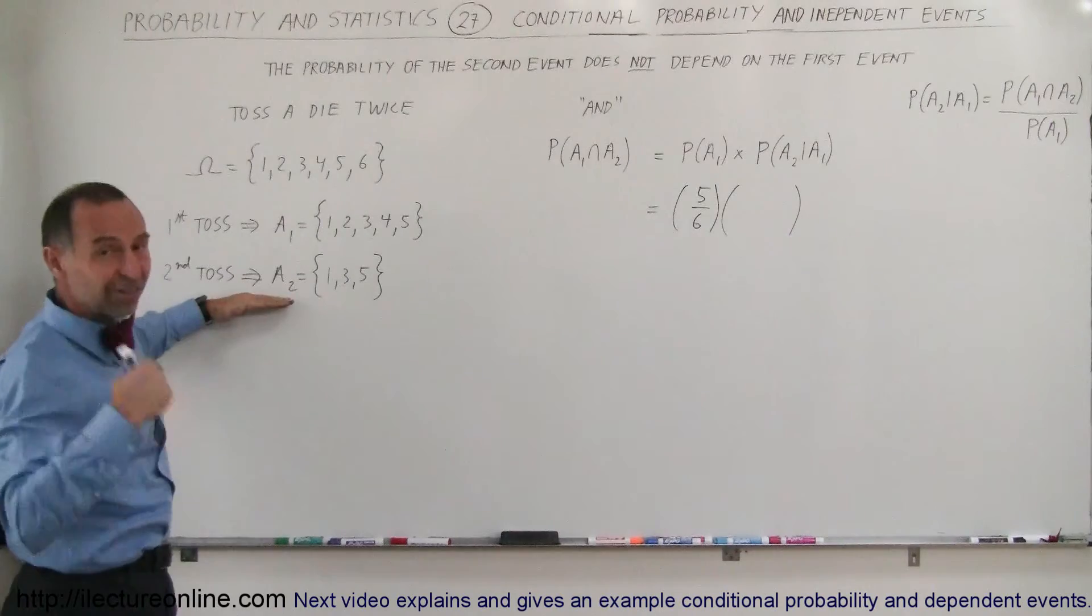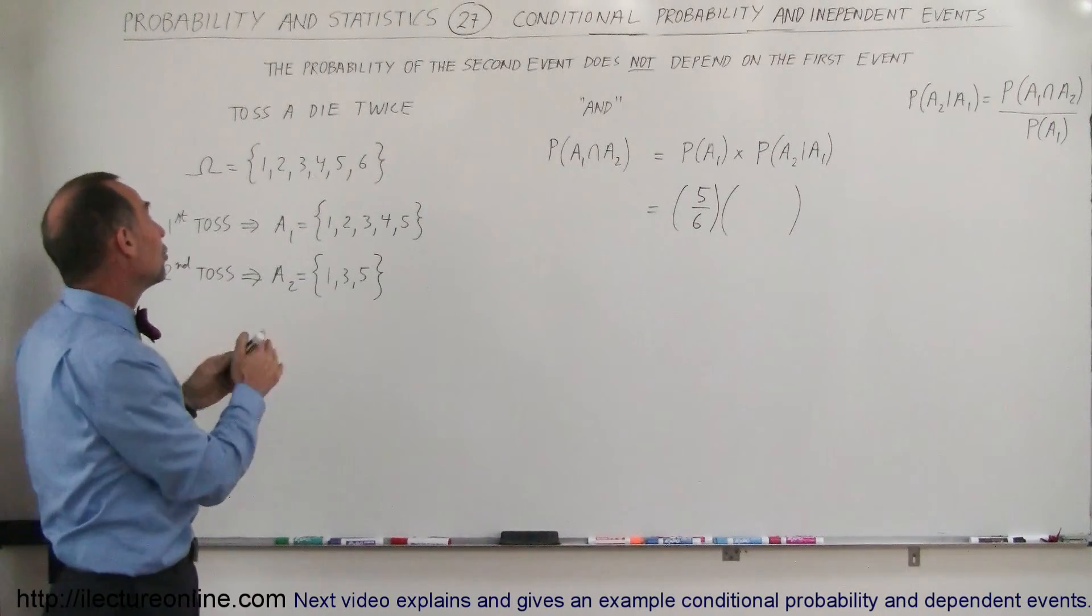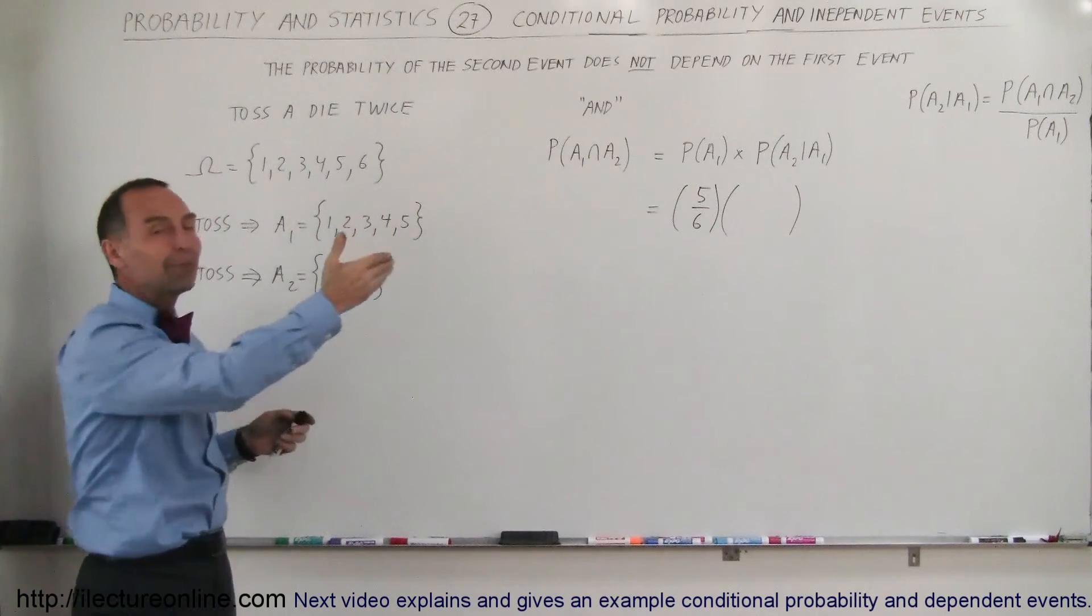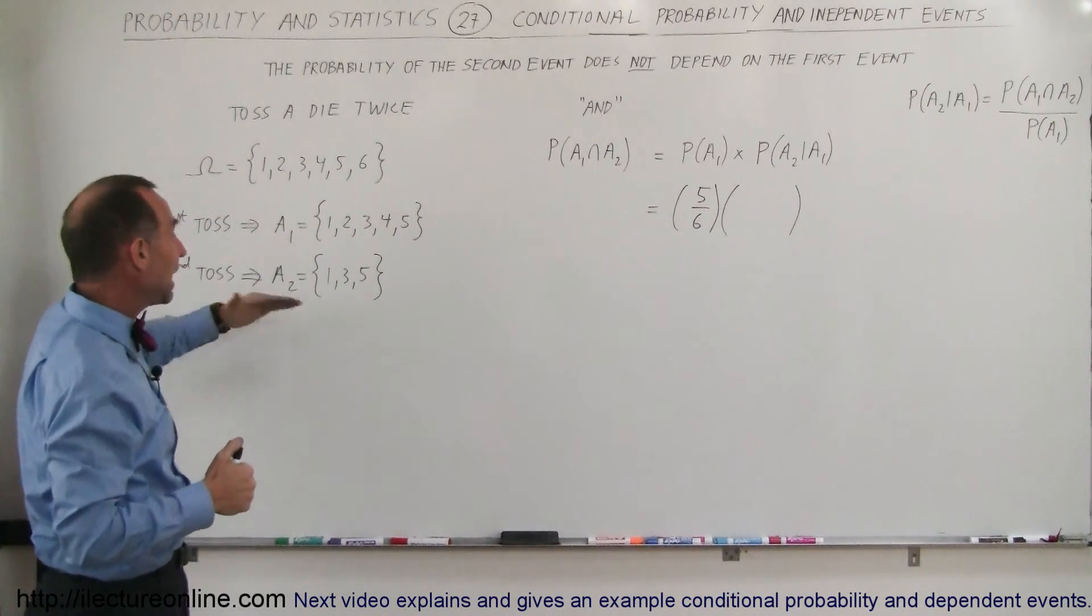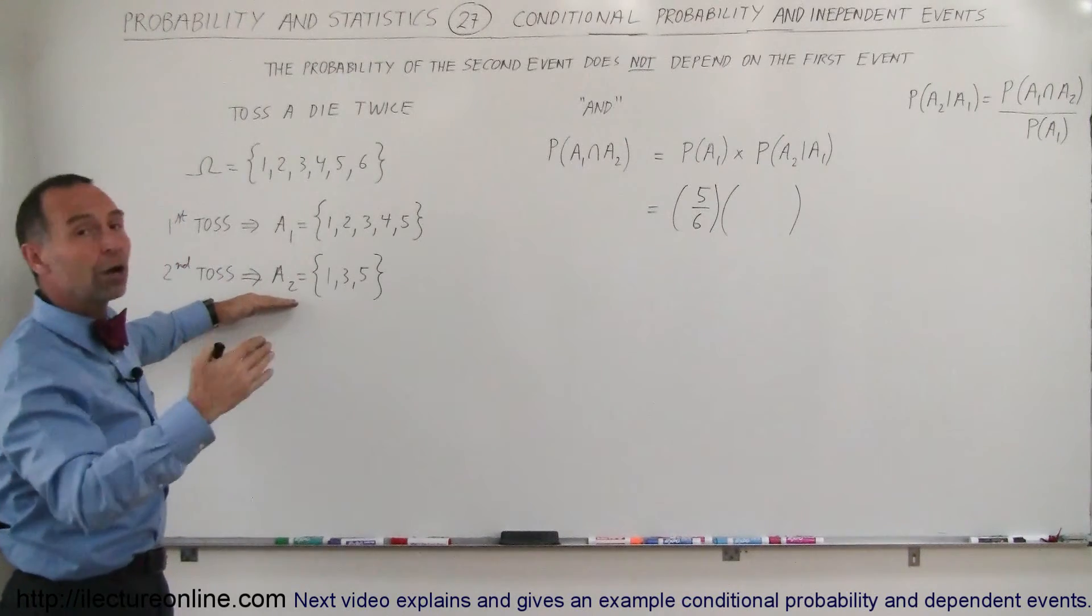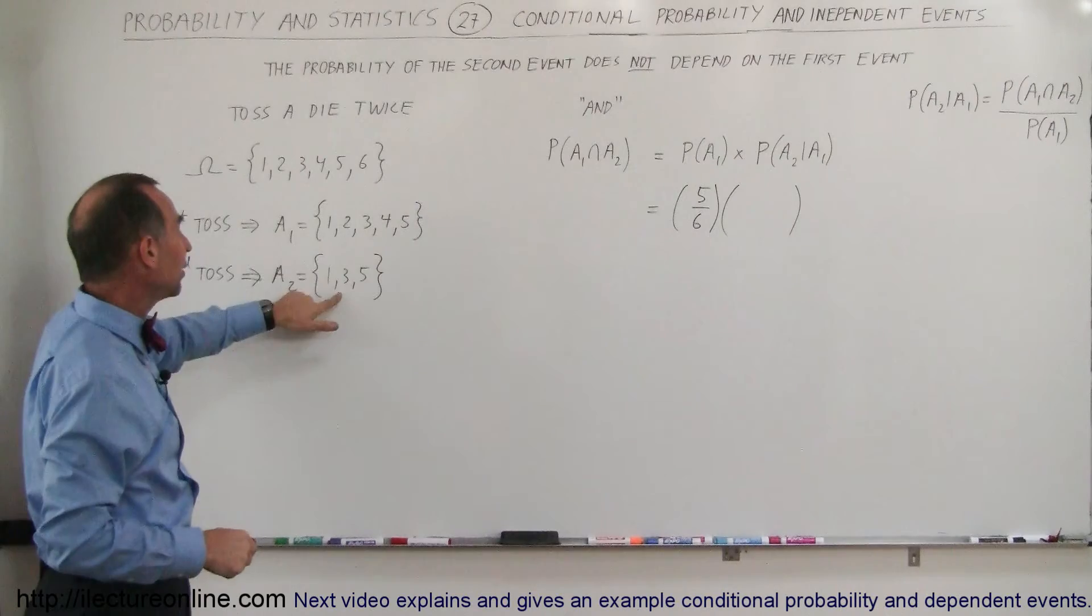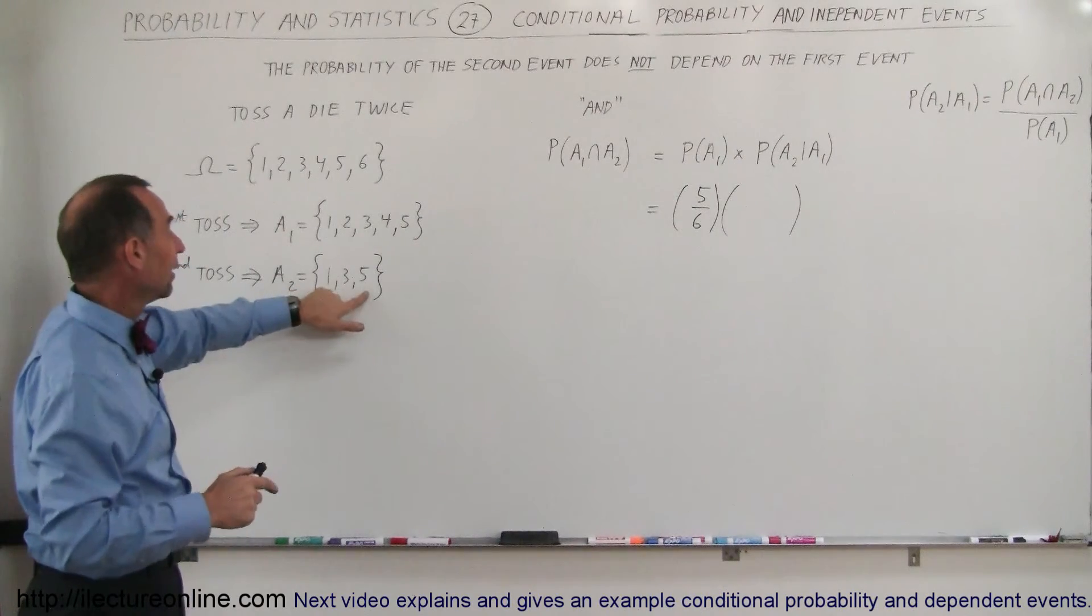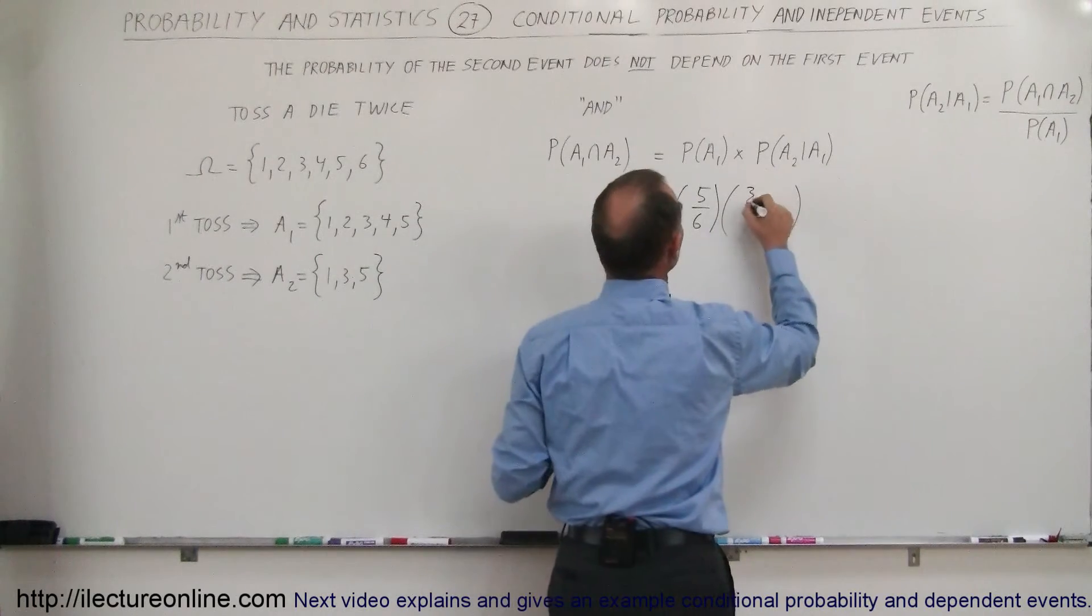But the fact that we toss it a second time, and that we're looking for an odd number, has really nothing to do with what happened on the first toss. It's completely independent of the first event. So therefore, A2 will occur irregardless of what has happened in A1. And so therefore, the probability of A2 occurring is simply these three numbers divided by the sample space. So this will simply be 3 divided by 6.